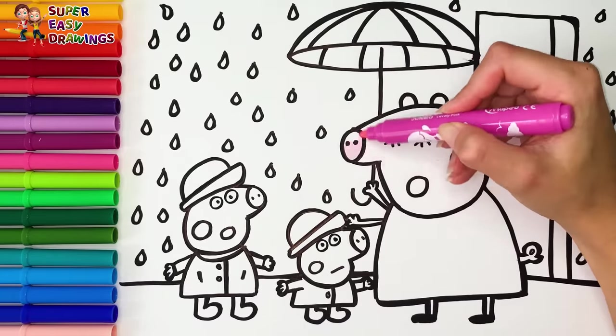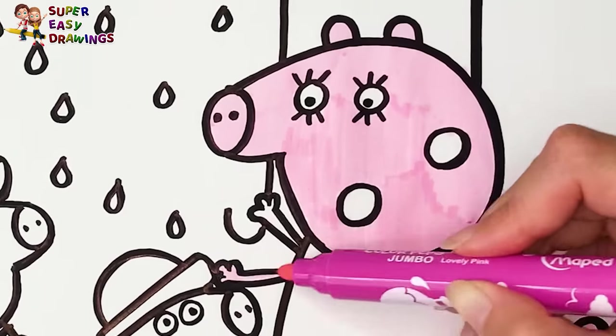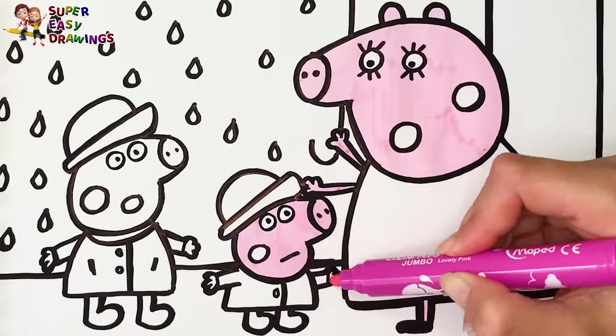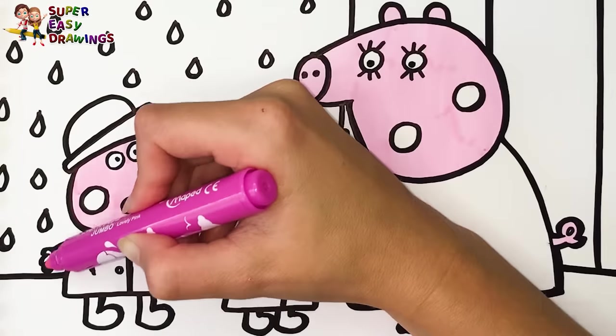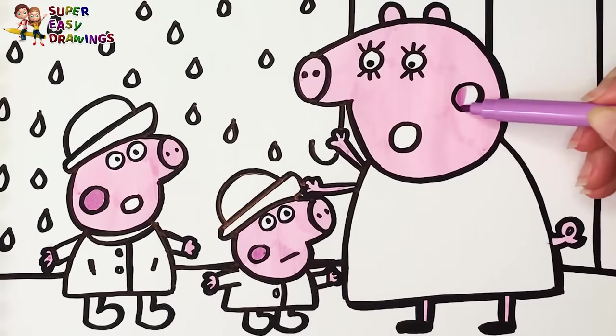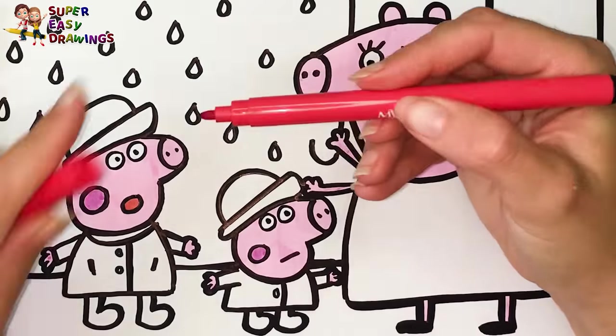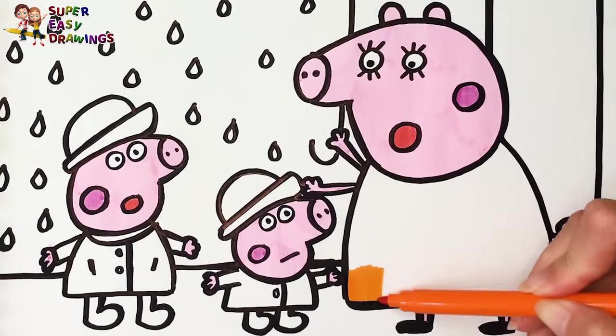Let's start coloring. I'm going to use this pink color for all of the piggies' skin. Then a light purple marker for their cheeks. I use this light red for their mouths. I color Mommy Pig's dress with orange.